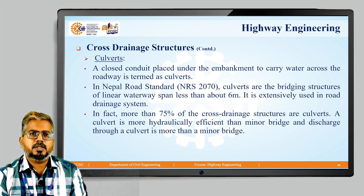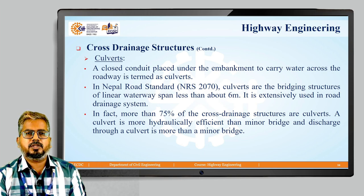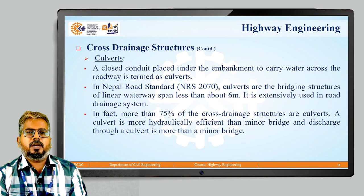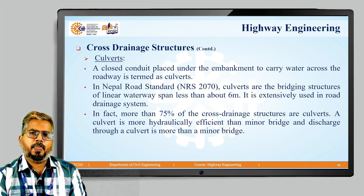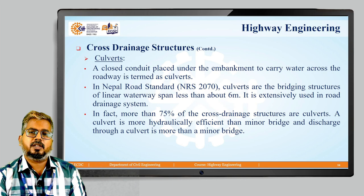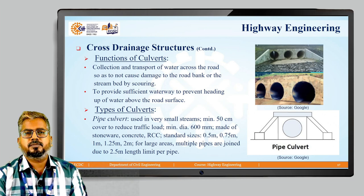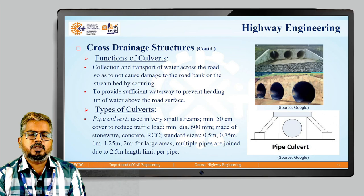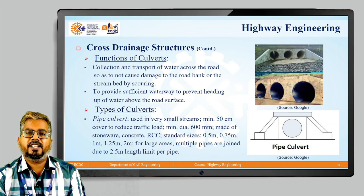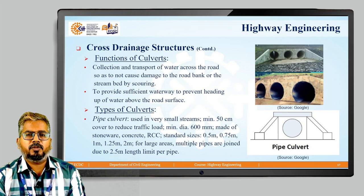The first cross drainage structure is the culvert. It is a closed conduit placed under the embankment to carry the water across the roadway, and is termed as a culvert. According to NRS 2070, culverts are the bridging structures of linear waterway spanning less than about 6 meters. It is extensively used in road drainage systems — in fact, more than 75 percent of cross drainage structures are culverts. A culvert is more hydraulically efficient than a minor bridge, and discharge through a culvert is more than through a minor bridge. The functions of culverts are: collection and transport of water across the road so as not to cause any damage to the road bank or the stream bed by scouring, and to provide sufficient waterway to prevent heading up of water above the road surface.